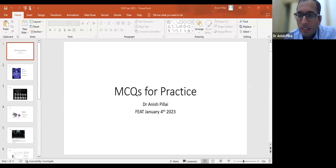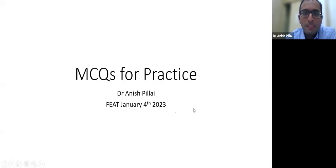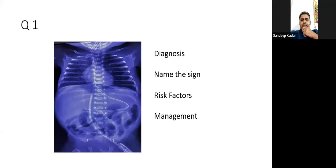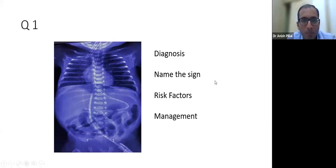Okay, so I hope everyone is alert and awake still. I'll go through some MCQs. I hope my screen is visible. Whoever wants to answer can just type in the chat box so there's no chaos. We'll start with this X-ray. This is a chest and abdomen AP view of a newborn baby. I want to know the diagnosis, what sign is seen, risk factors, and management.